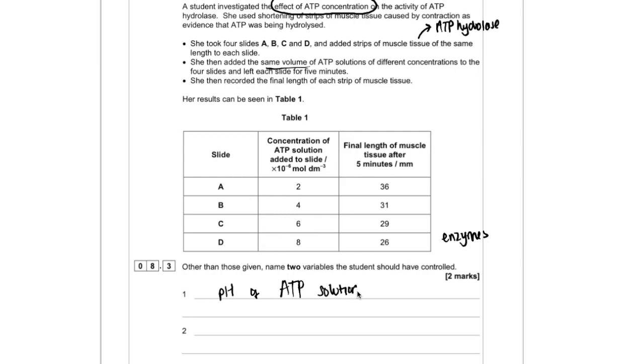Now, with regard to the muscle, there's lots of things we could have controlled there. We basically just want to make sure that it's the same type of muscle or it's coming from the same organism or same species. So you can put any of them. So I'm just going to say that take the muscle from the same organism.